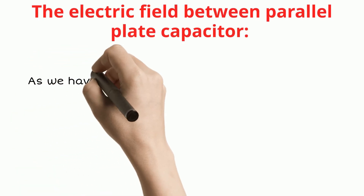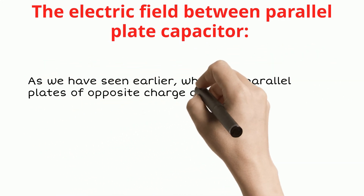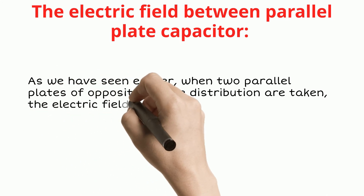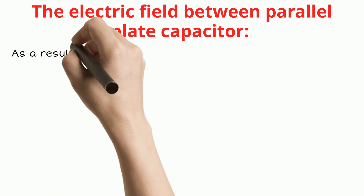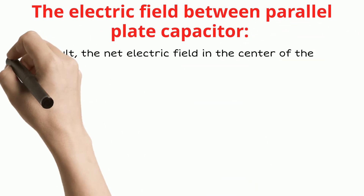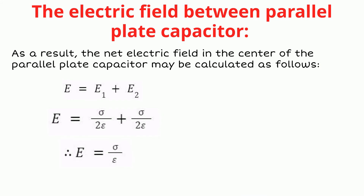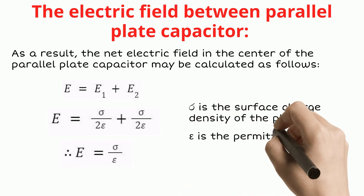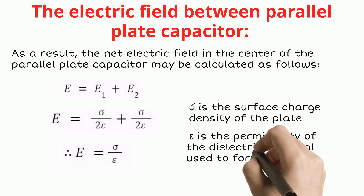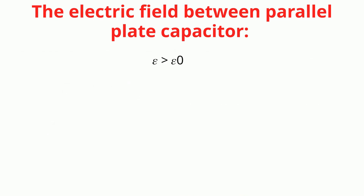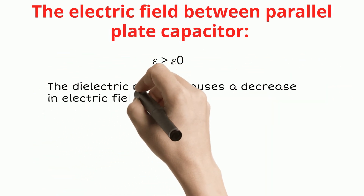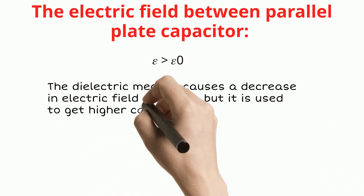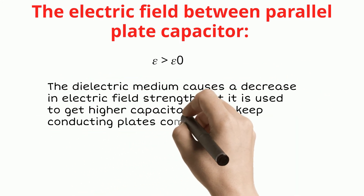Thus, to protect the capacitor, one should not exceed the applied voltage limit. As we have seen earlier, when two parallel plates of opposite charge distribution are taken, the electric field in the outer region will be zero. The net electric field in the center of the parallel plate capacitor is given by sigma upon epsilon, where sigma is the surface charge density and epsilon is the permittivity of the dielectric material. Since epsilon is greater than epsilon zero, the dielectric medium causes a decrease in electric field strength, but it is used to achieve higher capacitance and keep the conducting plates from coming into contact.